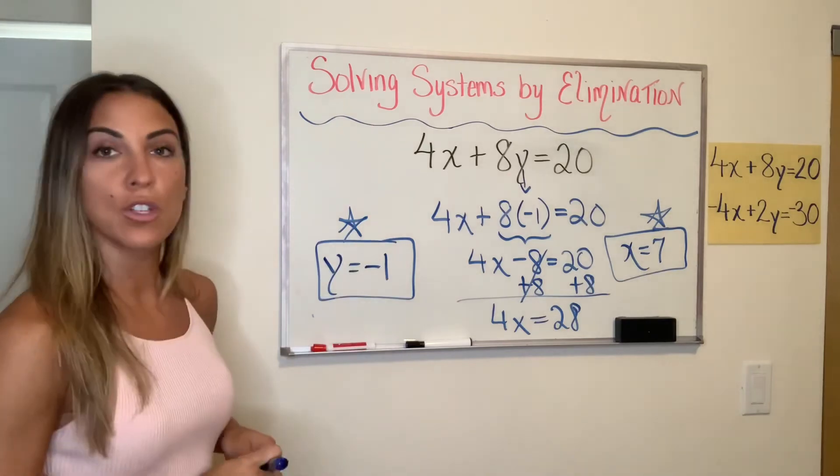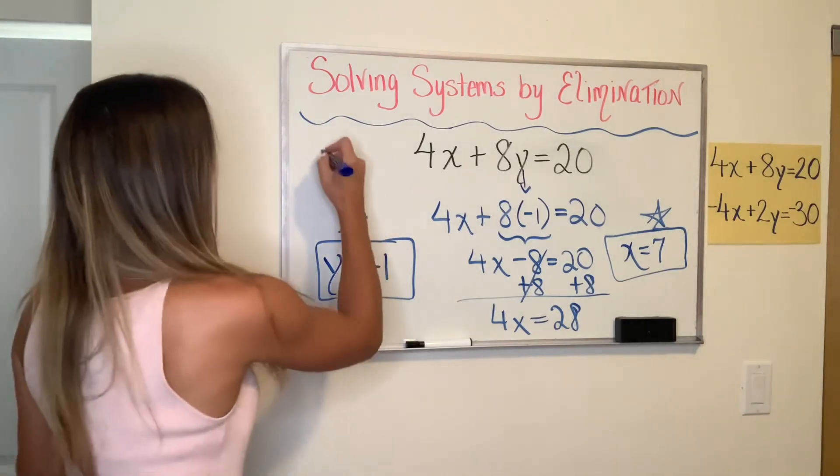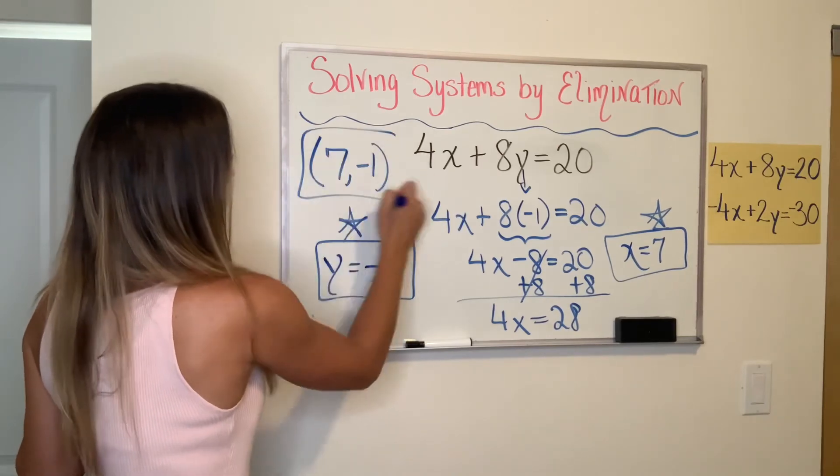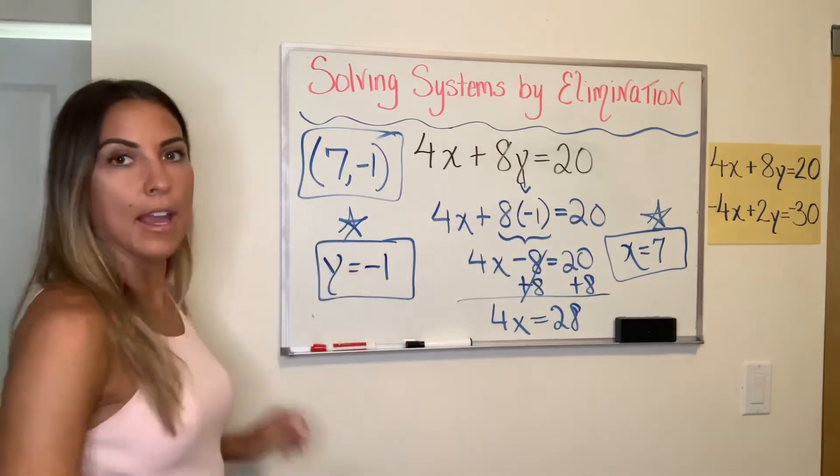Now you've got your X value. You've got your Y value. And you have your solution of the system, which means that if these two lines were to be drawn, they would intersect at the point 7, negative 1.